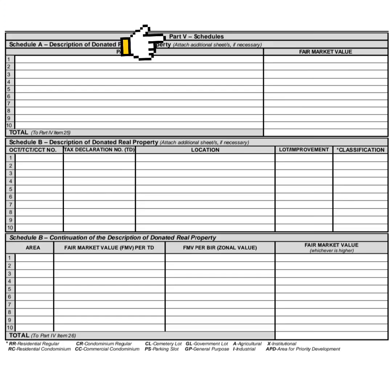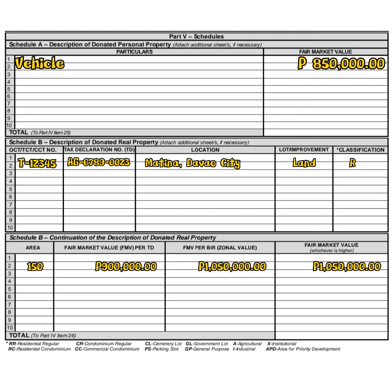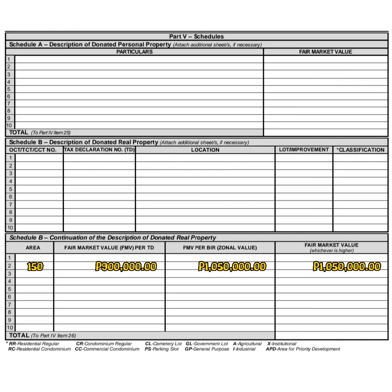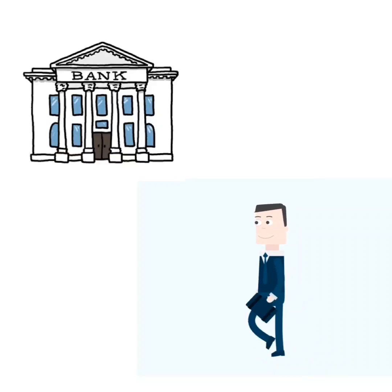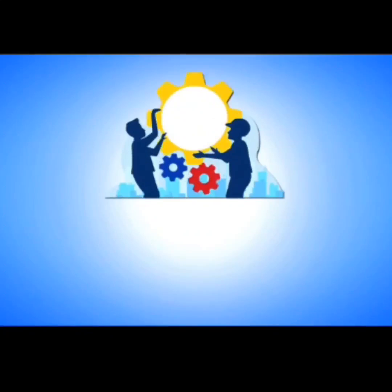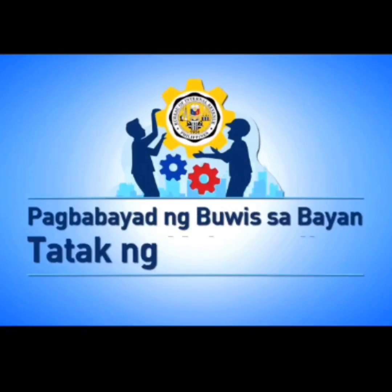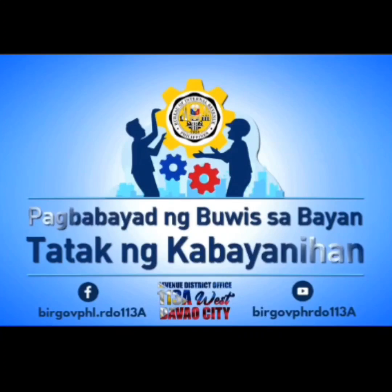Part 5: Schedules. This refers to the valuation of the personal and real properties involved in the donation. Please refer to your ONETT computation sheet for the details thereon. Make sure to fill up all the applicable fields. You may then proceed to the BIR-accredited bank of your choice to pay the said tax.